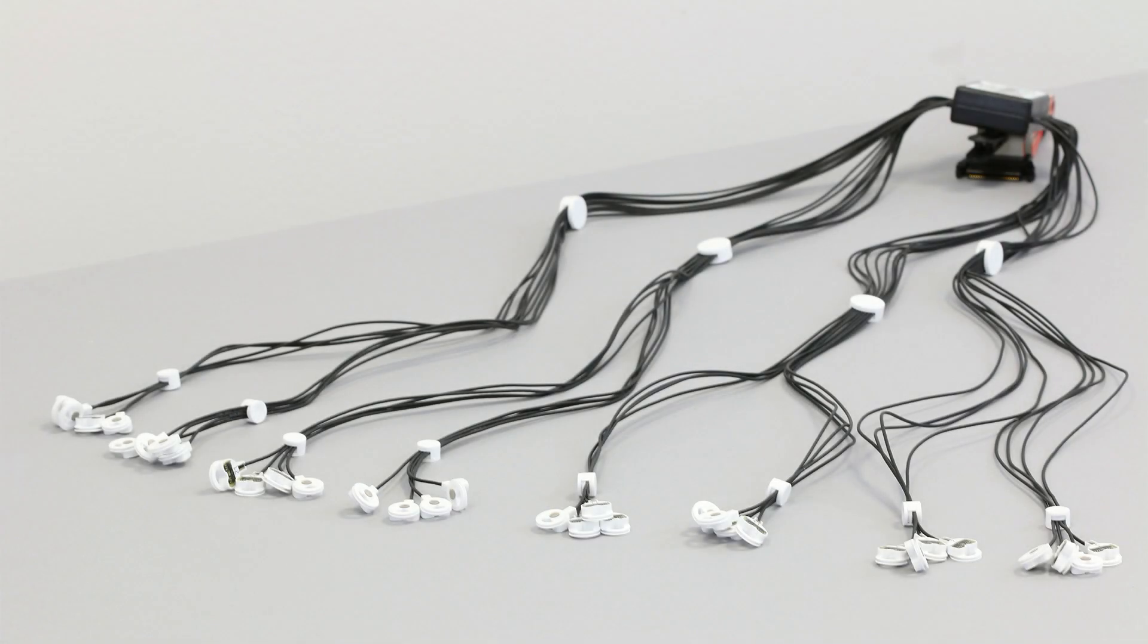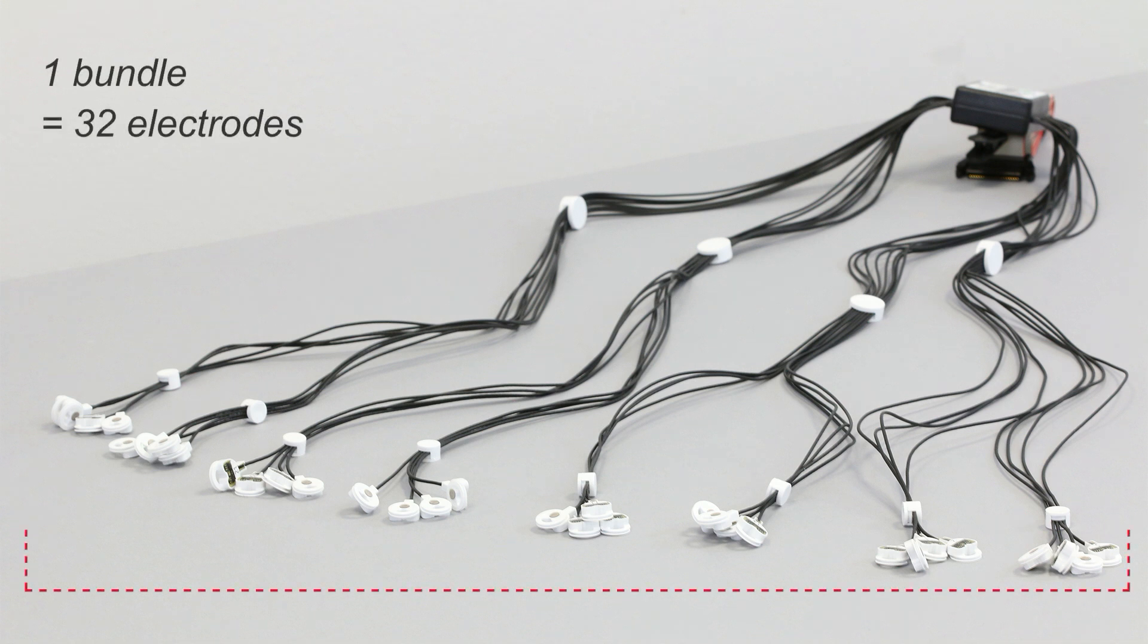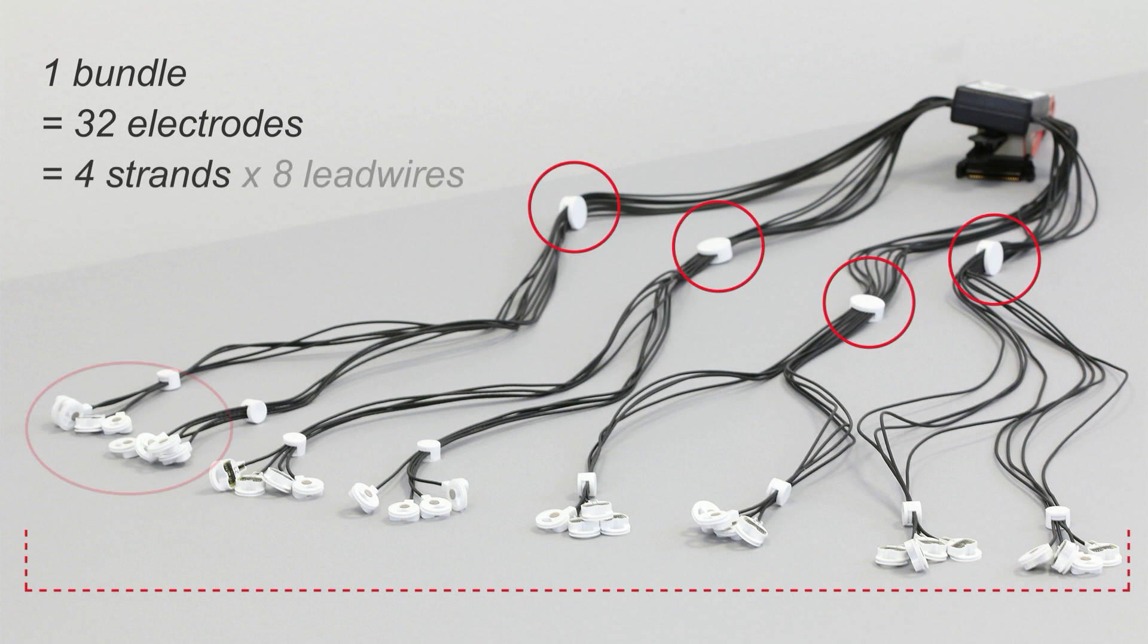ActiCap electrode systems have a flexible design consisting of stand-alone bundles of 32 electrodes, arranged in 4 strands of 8 lead wires.